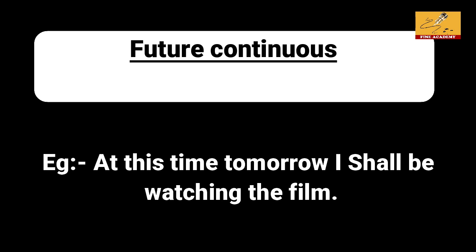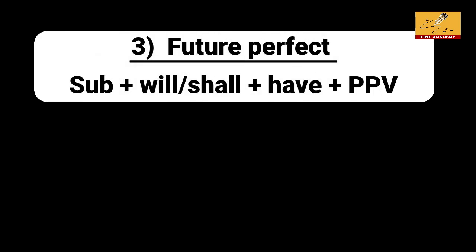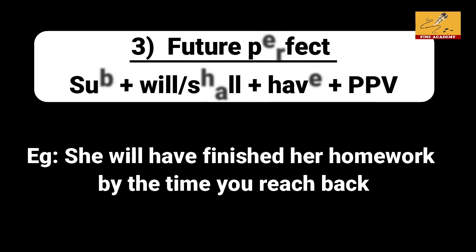Future perfect structure: subject plus will/shall plus have plus past participle verb plus object. For example: 'She will have finished her homework by the time you reach back.'